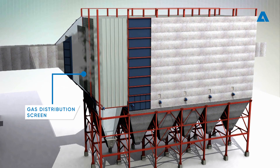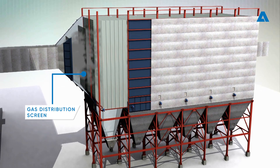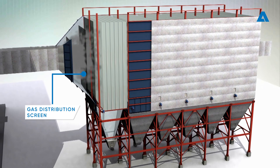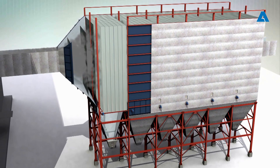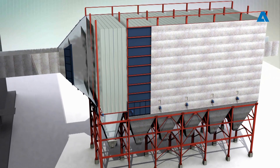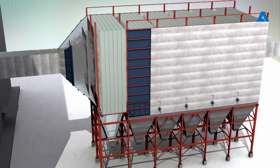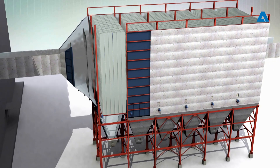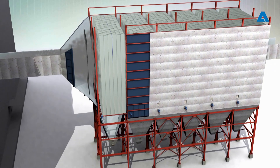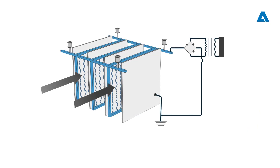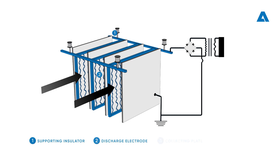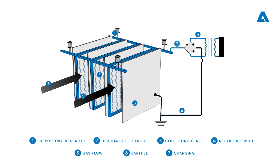The gas then enters the electrical fields, where it is directed into gas passages created by rows of collecting plates. Discharge electrodes are placed in the gas passages between two collecting plate rows.